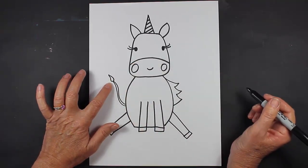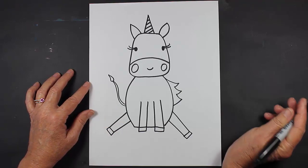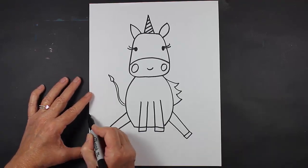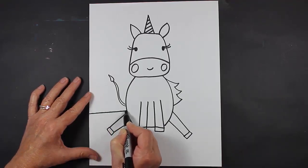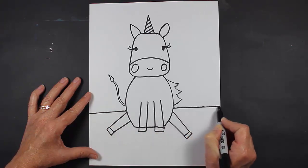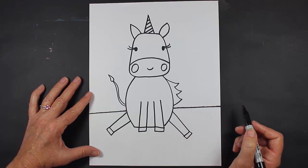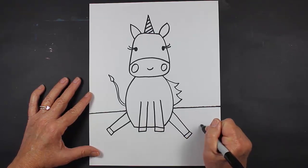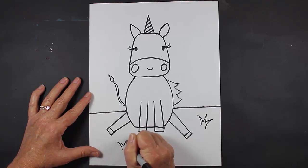Now my unicorn is going to be sitting on some grass, so I'm going to make a straight line, jump over my unicorn, come out the other side, and then I'm going to make some little sprigs of grass coming out just to add a little bit of detail.